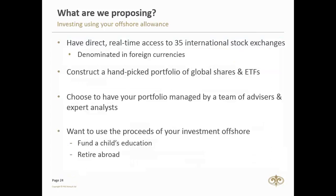The third way is to open up an offshore investment account. First, using your offshore allowance, you have direct exposure to 35 markets offshore. The JSE has about 450 listed companies, but the New York Stock Exchange alone has over 8,000 listed companies — the market gets much bigger when you go offshore. When you open an offshore account, you can elect what currencies you want to trade in, giving you exposure to many different markets and currencies.